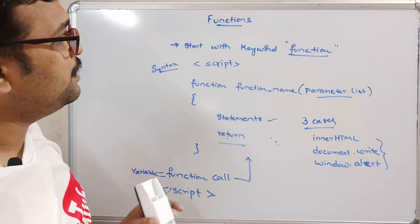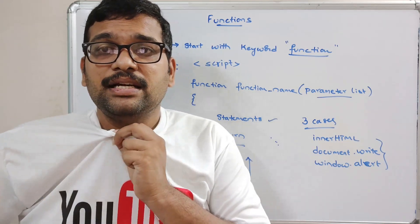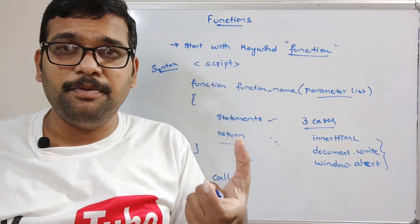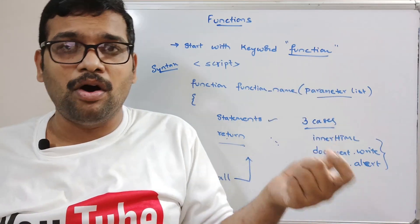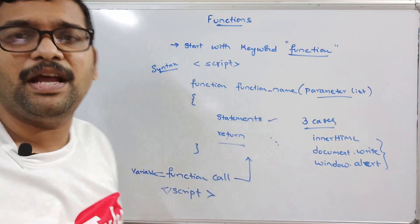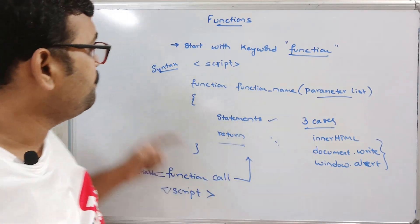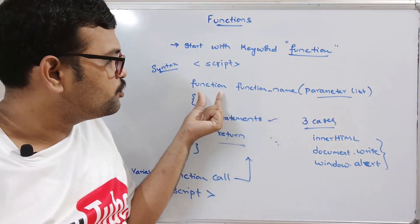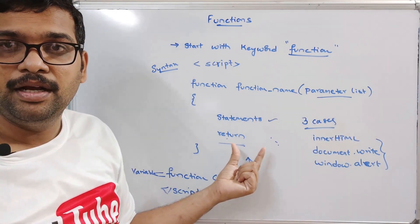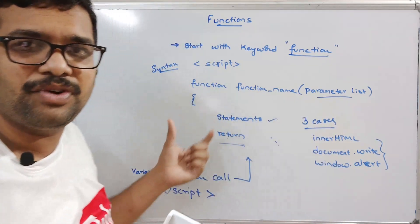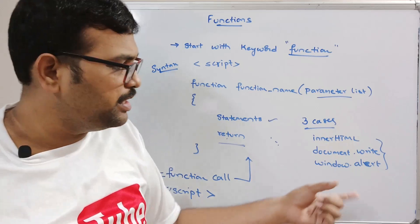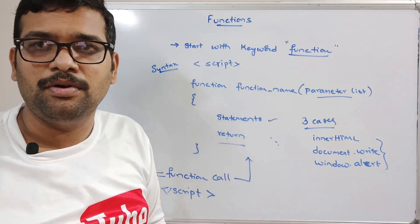To summarize: functions can be written inside the script tag, which can be placed in the head tag or body tag. User-defined functions start with the 'function' keyword, followed by the identifier name, parameter list, statements, and return. Now we'll move to the computer to demonstrate how many ways we can implement a function and display output using those three methods.